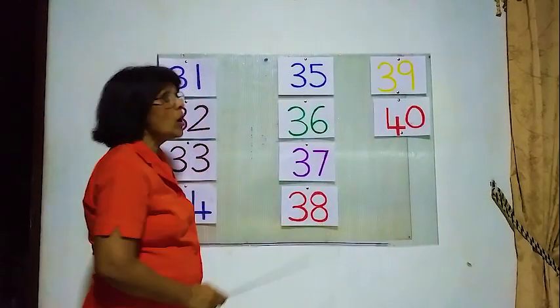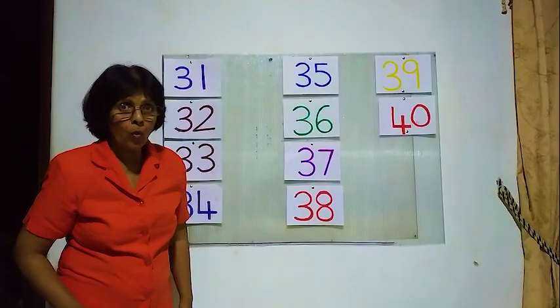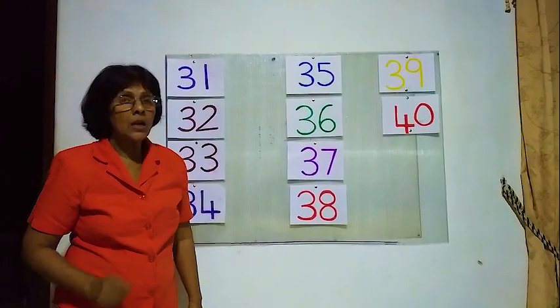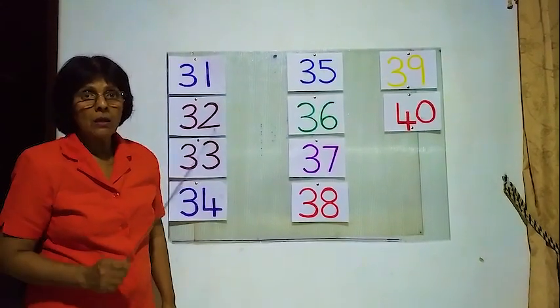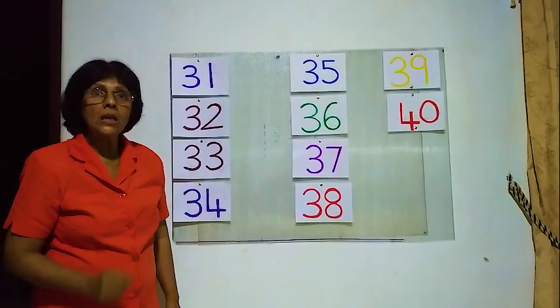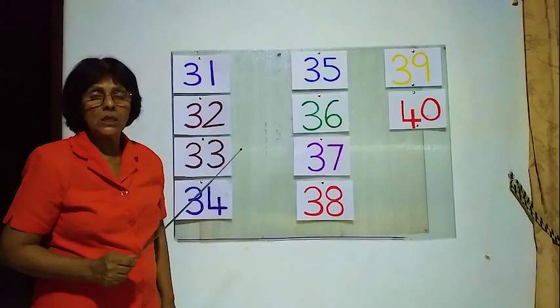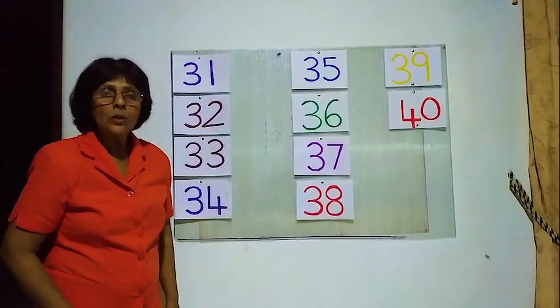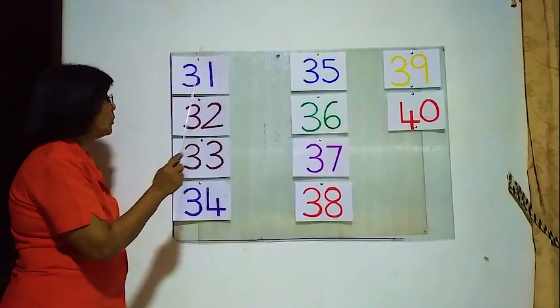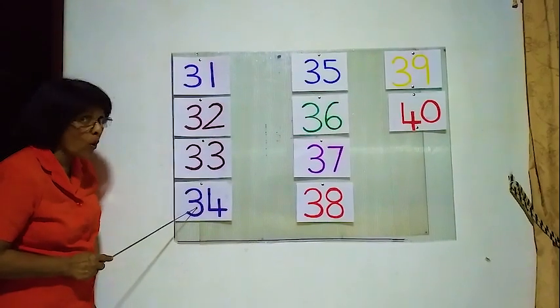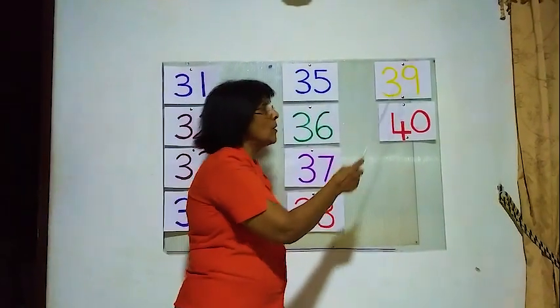Now we will count from 1 to 40. 1, 2, 3, 4, 5, 6, 7, 8, 9, 10, 11, 12, 13, 14, 15, 16, 17, 18, 19, 20, 21, 22, 23, 24, 25, 26, 27, 28, 29, 30, 31, 32, 33, 34, 35, 36, 37, 38, 39, 40.